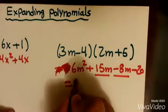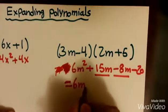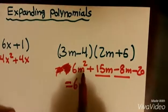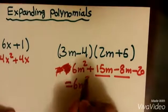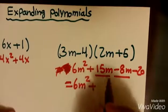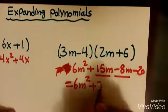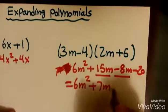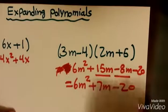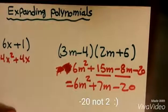6m squared doesn't have another term that looks like it, so it will come down as 6m squared plus 15m minus 8 is positive 7m and then negative 2. And that is your answer. I'll see you later.